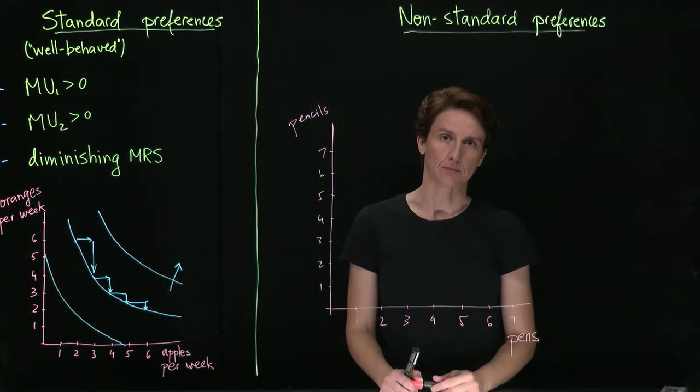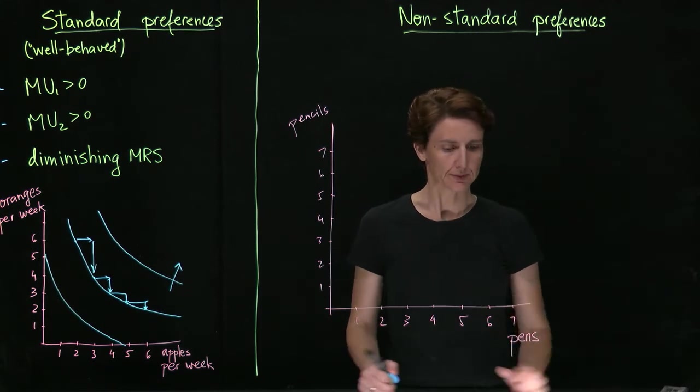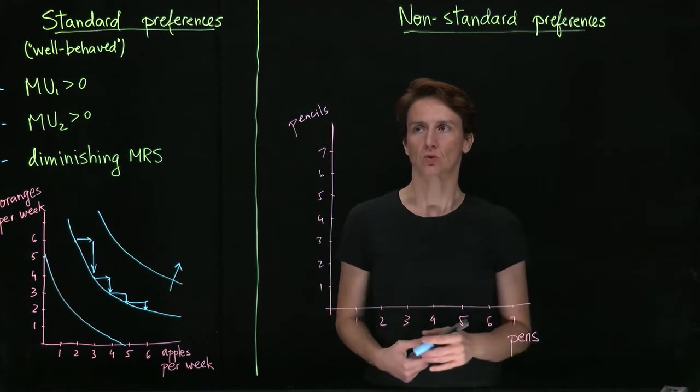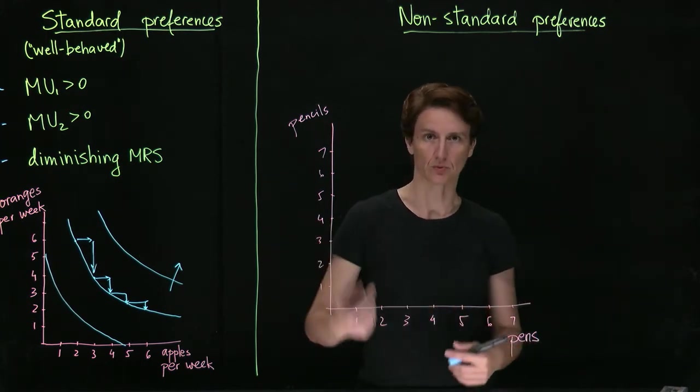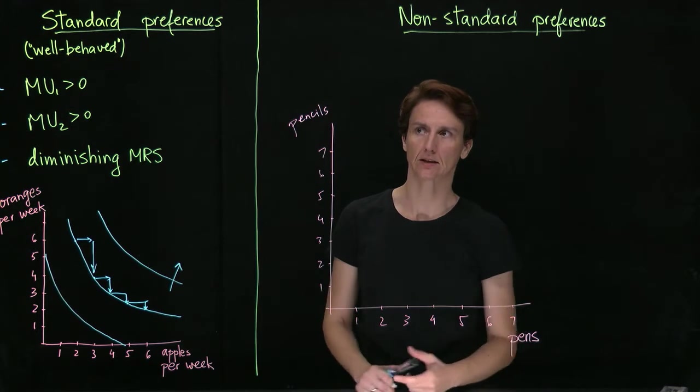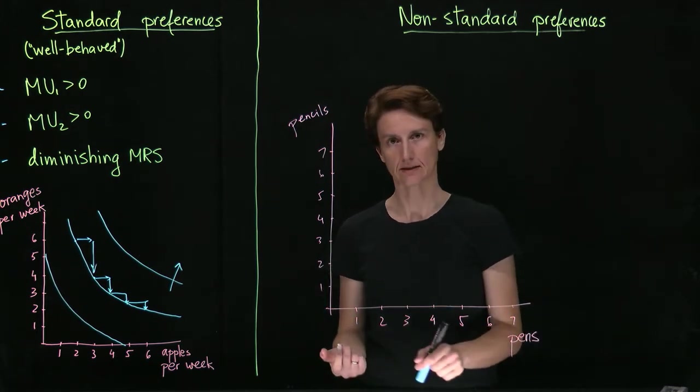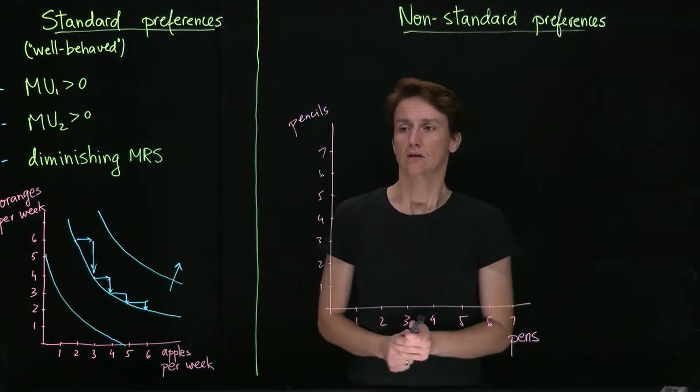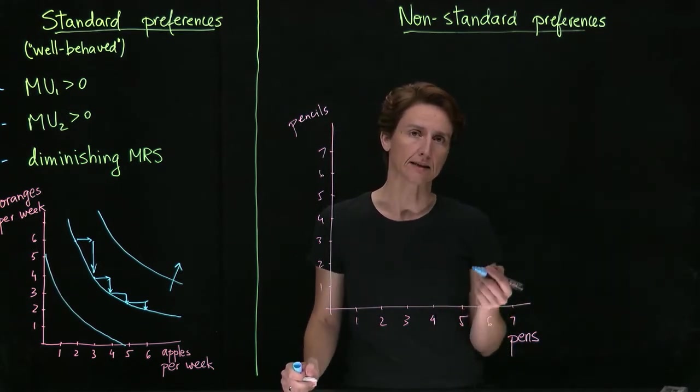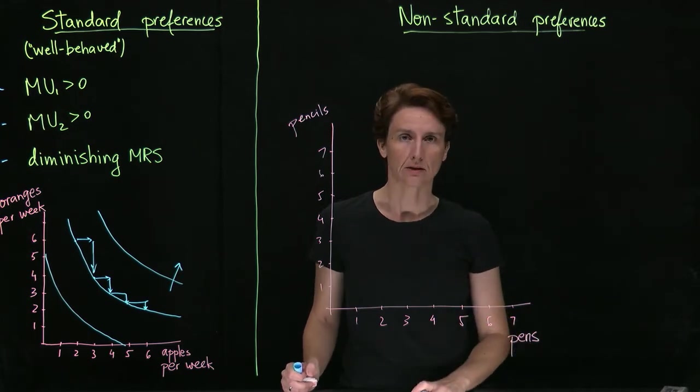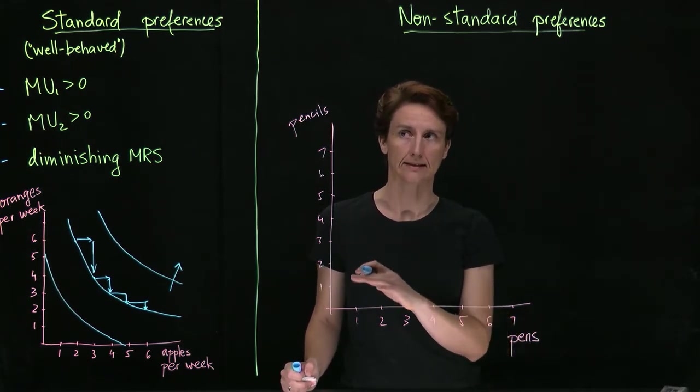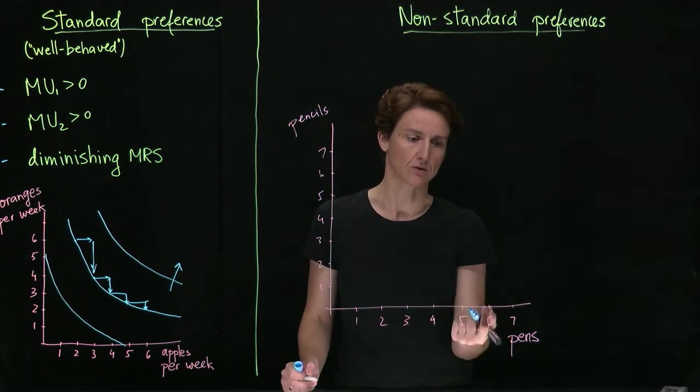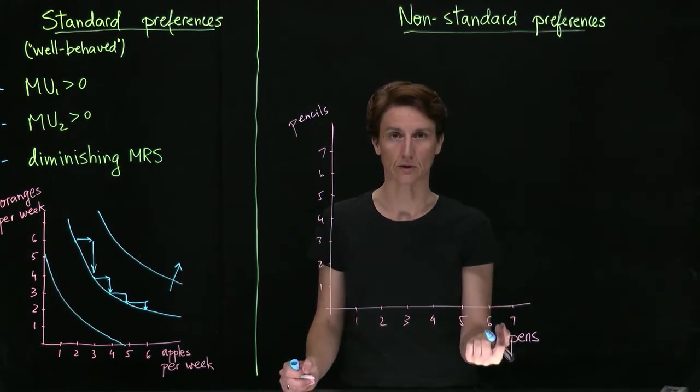Let's now look at a different example. Suppose that we're looking at preferences over pens and pencils. Well, for someone who doesn't have a preference between them, who thinks they're equally good at writing, they don't go back and erase anything so it's not a problem to write with pens. For that person, they're always willing to trade a pencil in exchange for a pen.